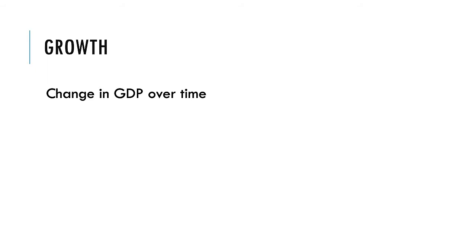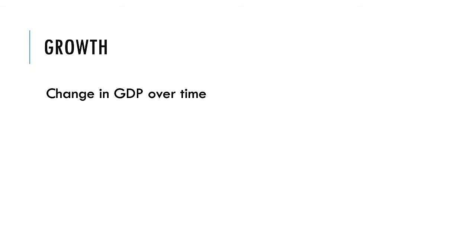Economic growth refers to change in GDP over time. Most Western economies are set up to require positive growth rates of at least 2% to keep standards of living and development consistent. Economies starting off at a low level of development often experience much higher levels of growth as they develop, but very high growth rates can be accompanied by inflation and other factors that will later depress growth. When countries have a negative growth rate, it is usually called an economic contraction.